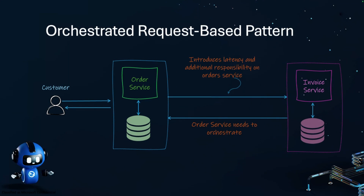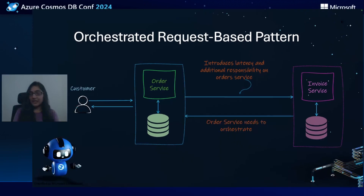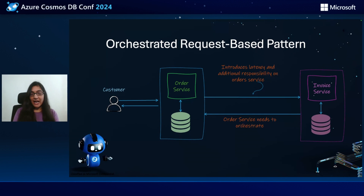In this first approach, which is the orchestrated request-based pattern, after a user places an order, we save the order details, and then we send that order to an invoice service to kick off invoice processing. Note how tightly coupled both these services are, and the order service attempts to orchestrate that entire distributed transaction. This process introduces latency and an additional responsibility on the order service.